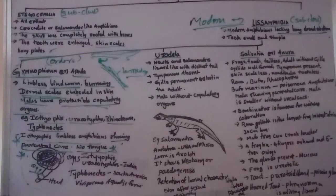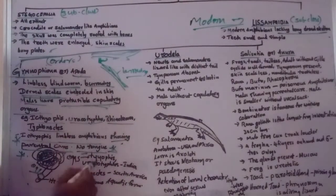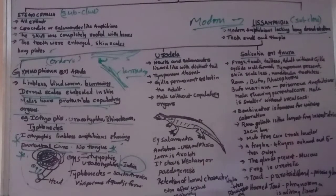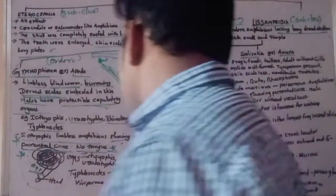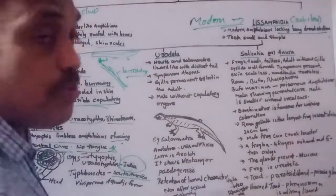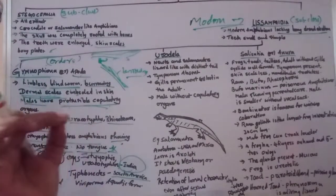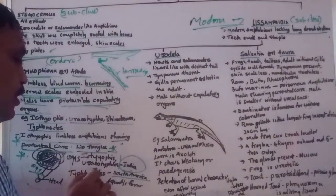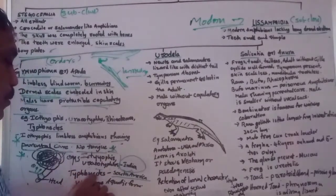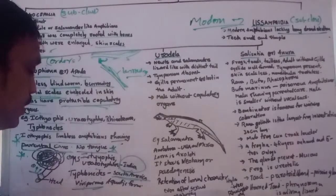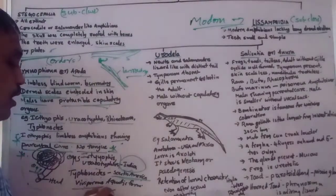Ichthyophis and Uraeotyphlus are both found in India. Typhlonectes is found in South Africa. Typhlonectes is viviparous — it gives birth to young ones rather than laying eggs — and it lives in aquatic forms, in water.